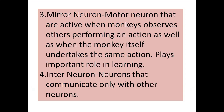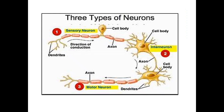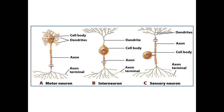The third type of neurons are mirror neurons. These are motor neurons that are active when monkeys observe others performing an action as well as when the monkey itself undertakes the same action. Mirror neurons play an important role in learning. The fourth type are inter-neurons — these are neurons that communicate only with other neurons. In the diagram, sensory neurons carry input from left to right, inter-neurons relay the signal, and motor neurons carry the command from the brain to the muscles of the body.